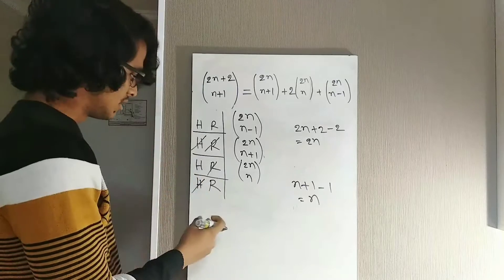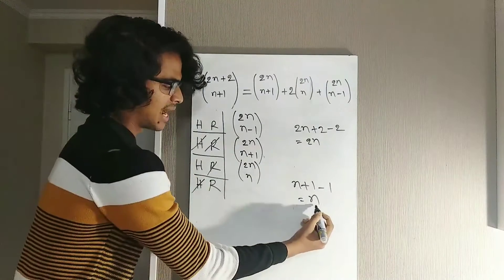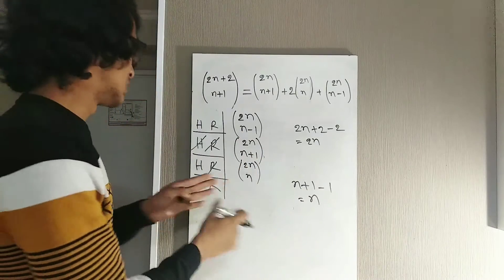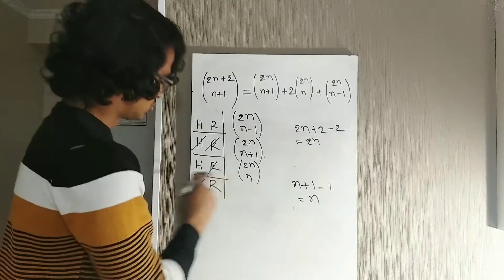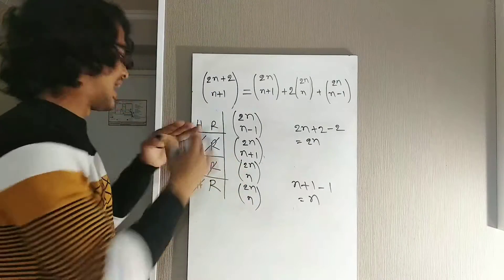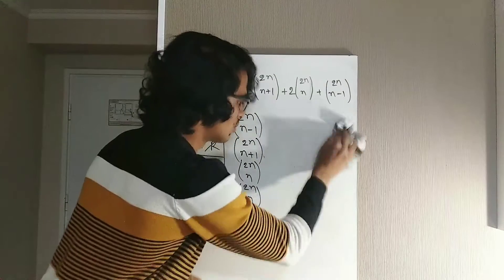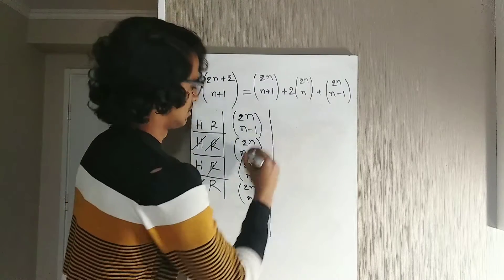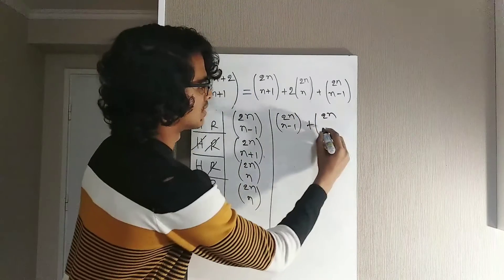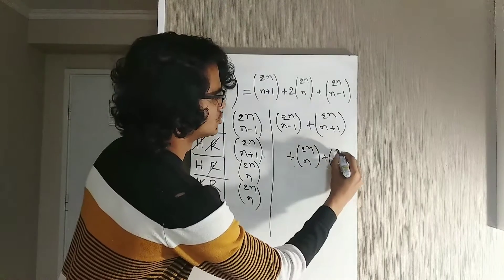The final case is the reverse: Harry will not be in the team, but Ron will. We again need to choose n more players from the 2n remaining players in the squad, since Harry is out and Ron is already in. So this case also gives us C(2n, n) different ways. The total across all four cases is: C(2n, n-1) + C(2n, n+1) + C(2n, n) + C(2n, n).